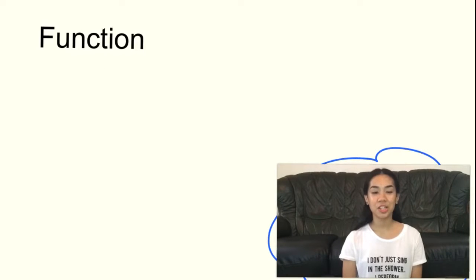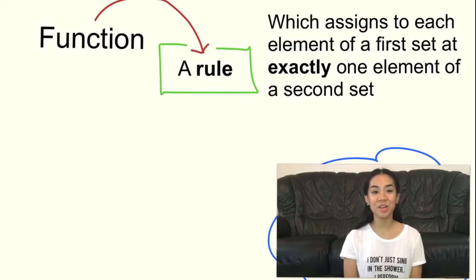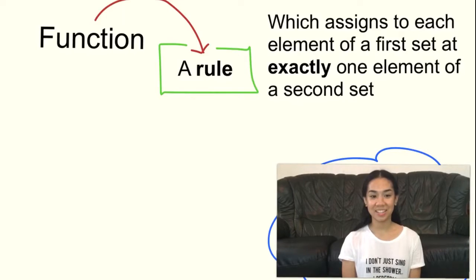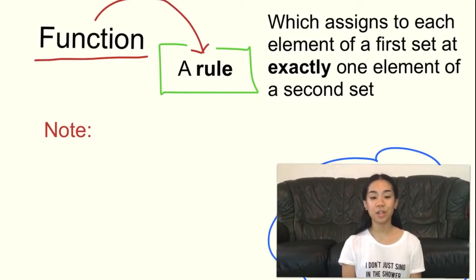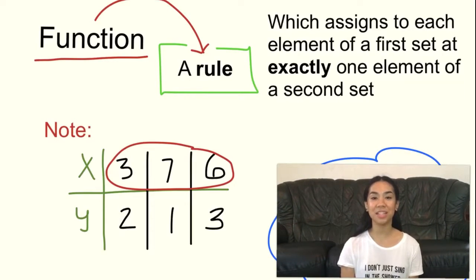A function is also a rule which assigns each element of a first set exactly one element of a second set. Keep in mind that it is a function if there is no first element repeated.